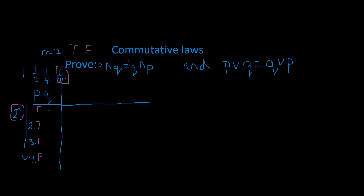Why does it say one fourth? We say one fourth because every one out of four of them is going to be true. So we're going to go: true, false, true, false. So it's going to be one fourth — every one fourth of this. This is one fourth, and then this is one fourth, and then one fourth, changing the order: one fourth for true then false, then one fourth, true and false.